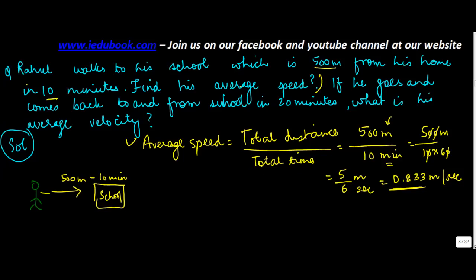This was the first part of the question. Now for the second part: he goes to school and comes back in a total time of 20 minutes. The total distance he covered is 500 meters going plus 500 meters coming back, so the total distance traveled is 1000 meters.